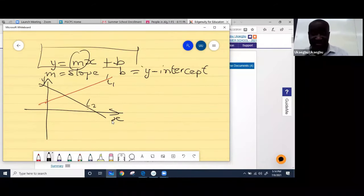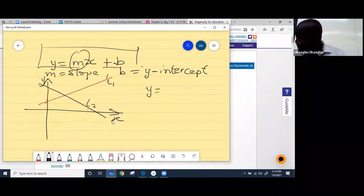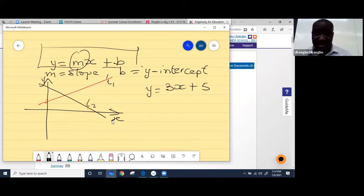So for example, if I write, let's say y equals three x plus five, what that means is that the slope of this line is three and the y-intercept is plus five. This is y-intercept plus five.